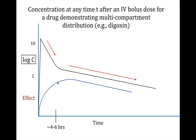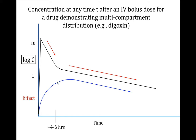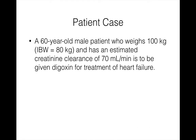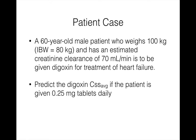Let's solve the case now related to digoxin dosing. We have a 60-year-old male patient who weighs 100 kilograms and whose ideal body weight is 80 kilograms. Our patient has an estimated creatinine clearance of 70 milliliters per minute and is going to be given digoxin for the treatment of heart failure. What we'd like to do is predict the digoxin steady state average concentration if the patient is given 0.25 milligram tablets daily.